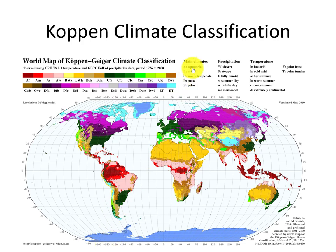After the main climate letter, there are sub-classifications. For precipitation, we have: W for desert, S for steppe, F for fully humid, S for summer dry, W for winter dry, and M for monsoonal.